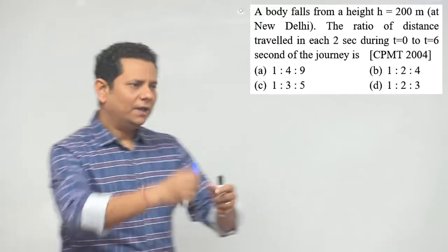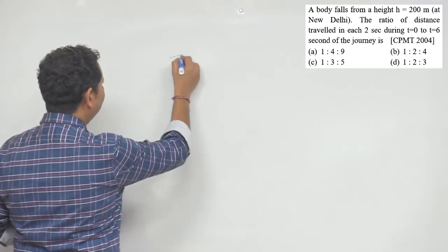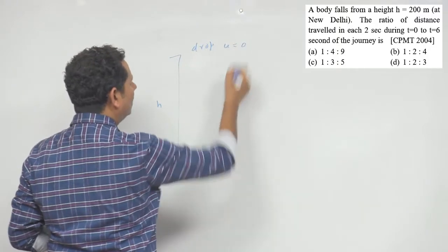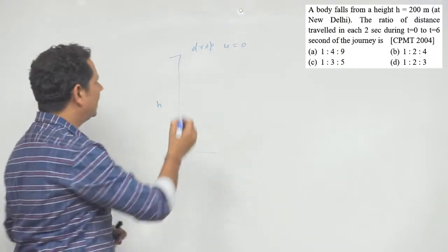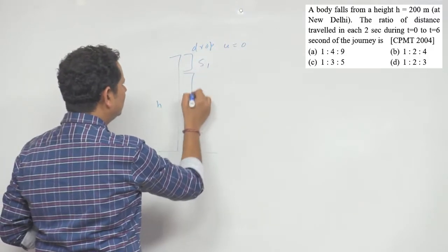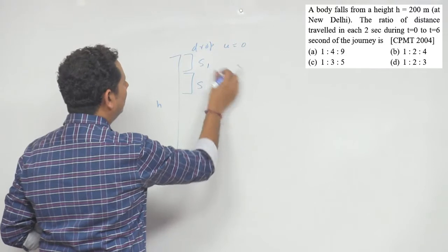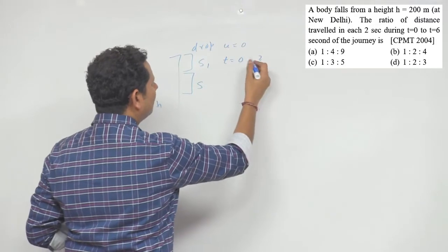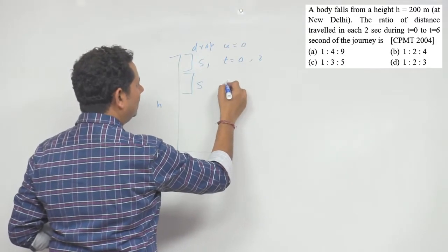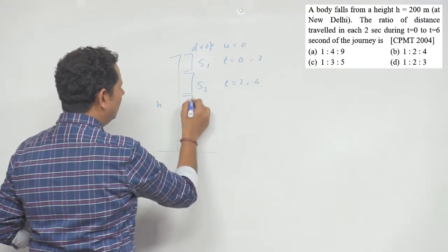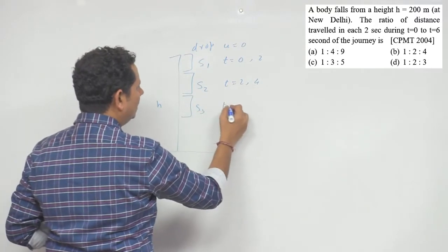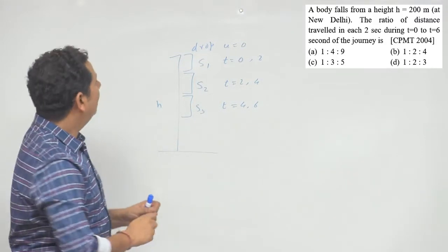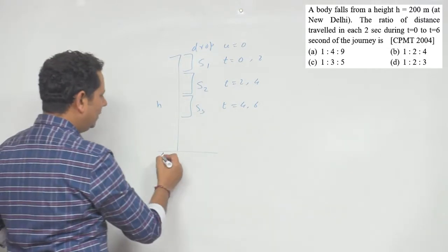This is a good question because you have to consider the drop. S1 is the distance traveled from t = 0 to 2 seconds, S2 is the distance traveled from t = 2 to 4 seconds, and S3 is from t = 4 to 6 seconds. We need to find the ratio S1 : S2 : S3.